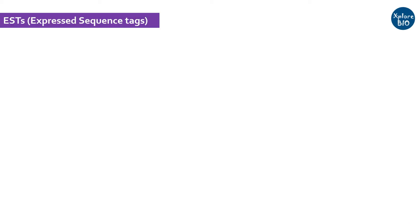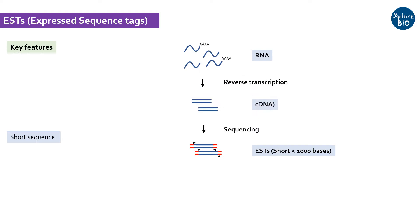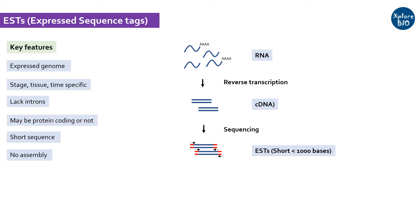The first is ESTs. ESTs, or expressed sequence tags, are short DNA sequences of usually less than 1000 bases long, obtained by single-pass sequencing of complementary DNA fragments. Single-pass sequencing means it is an unassembled sequence obtained in one go from a sequencing run. This means ESTs represent RNA, or the expressed region of the genome, at a given time in a given tissue of a specific stage. ESTs lack introns and may or may not code for proteins. Hundreds and thousands of ESTs are usually produced from a single sequencing run. dbEST is the database of GenBank in which such ESTs can be submitted and downloaded.